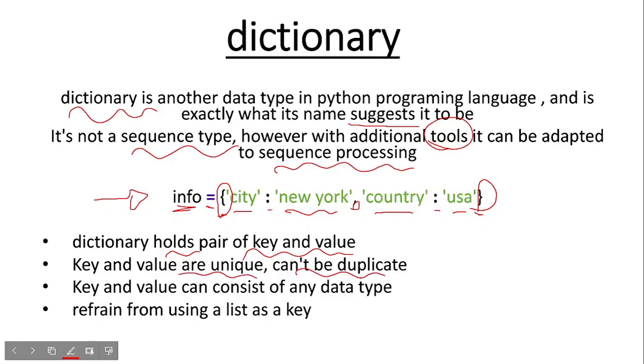Key and value are unique and cannot be duplicated. What it means is if we were to place another pair of key and value inside our dictionary with the same set of key and values, then use the print function, we will have only one pair of key and value with the same name displayed on our screen.